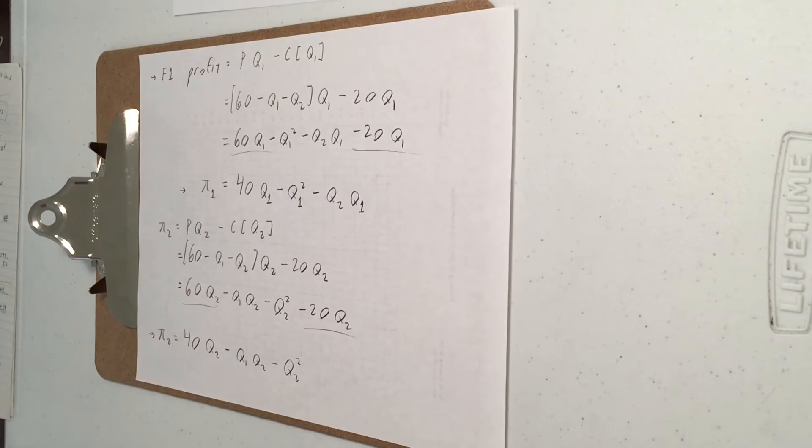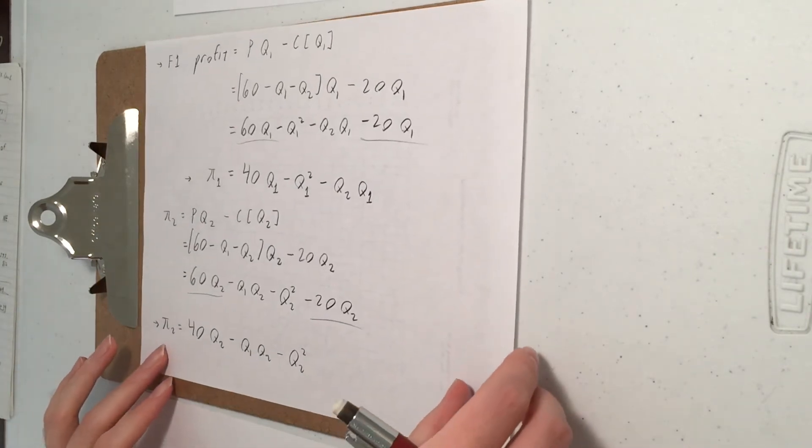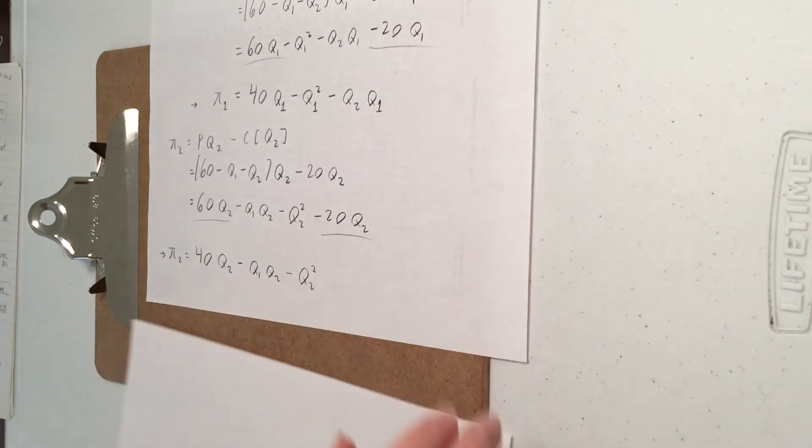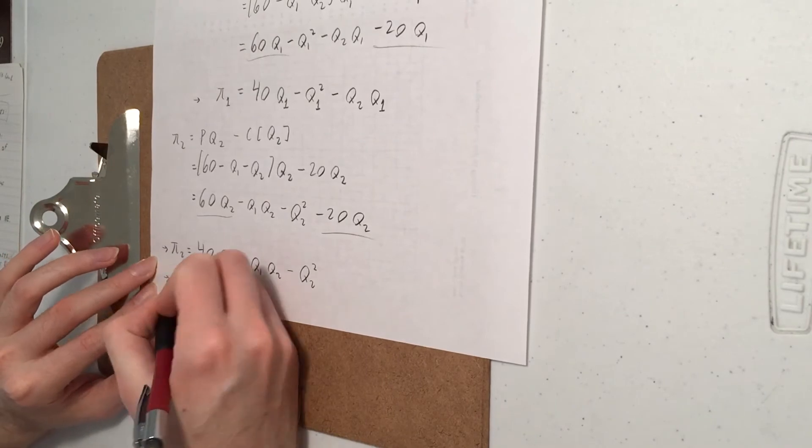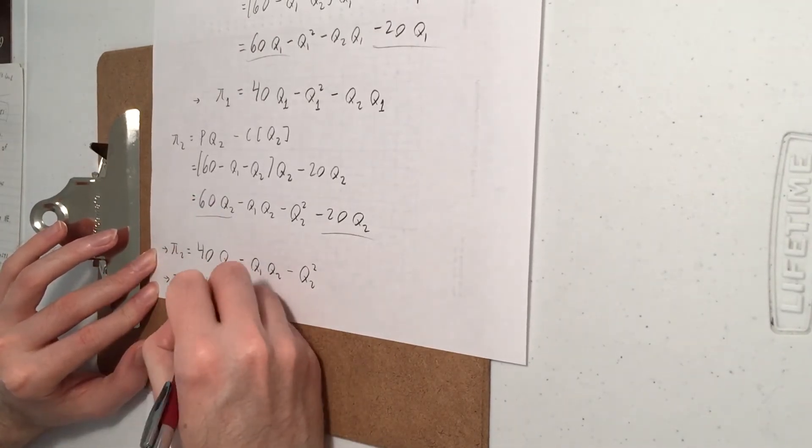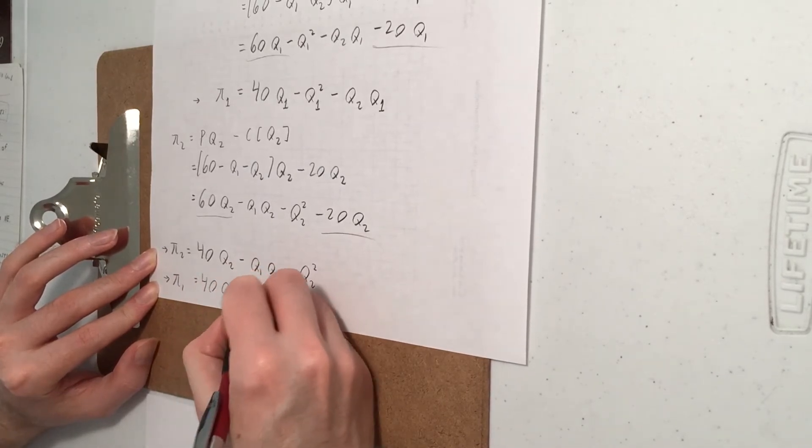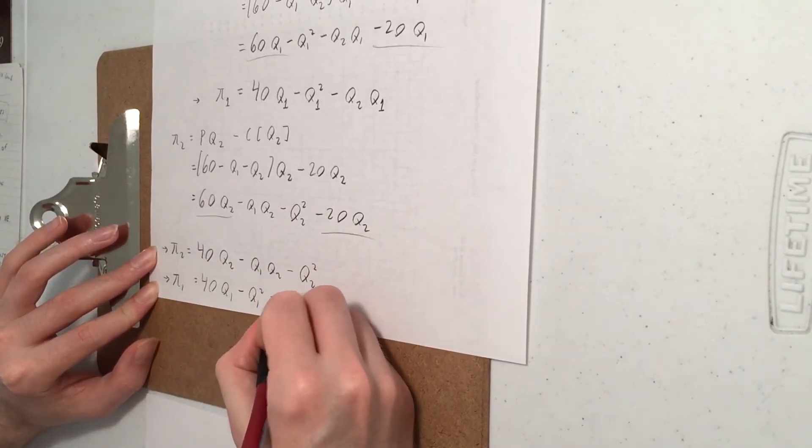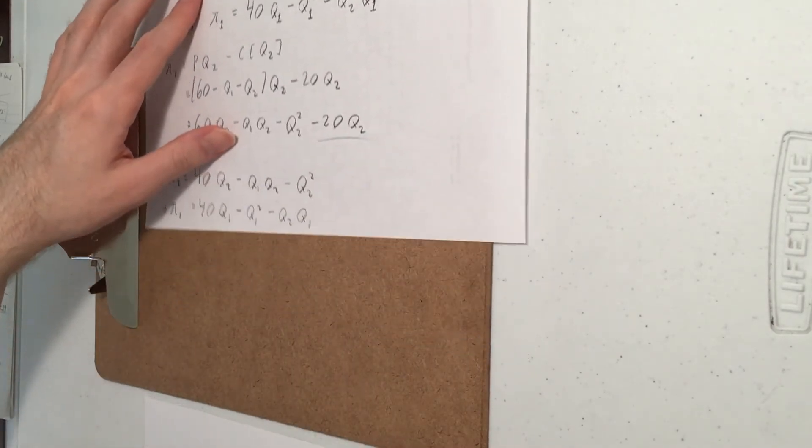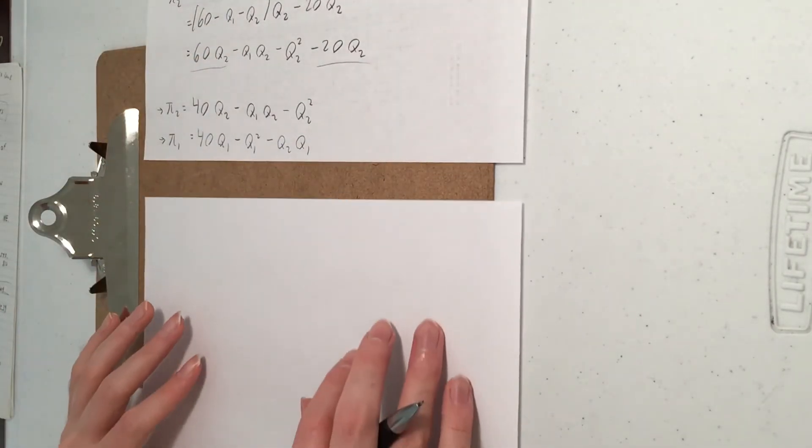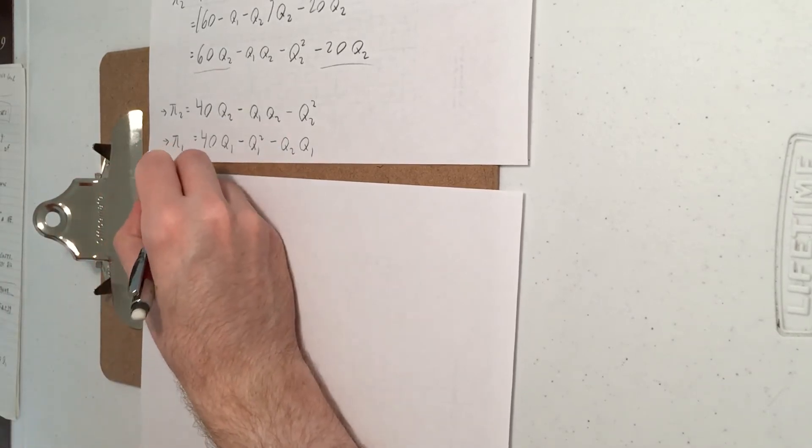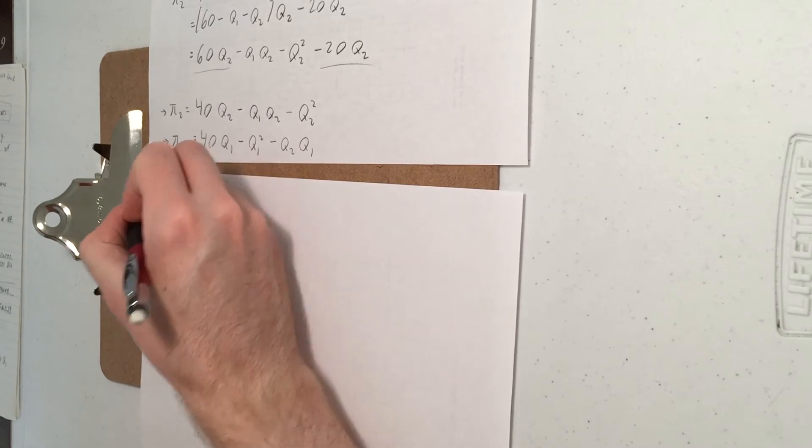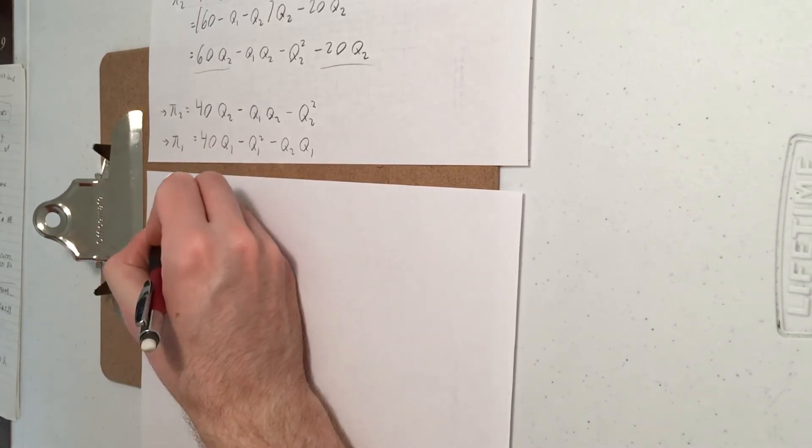All right. I'll assume you've given that some thought, so let's solve it. I'll just rewrite PI1 down here for convenience. So you take partial derivatives and set them equal to zero to maximize the payoffs. So partial derivative of PI1 with respect to Q1.